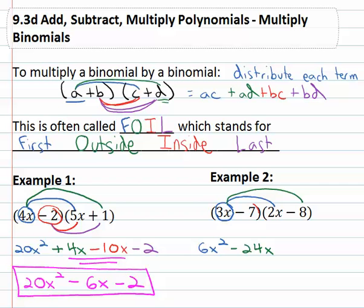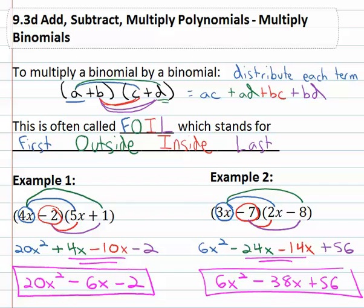Now we grab the second term, in this case it's a negative 7, and distribute it through the next polynomial. Negative 7 times 2X is negative 14X, and finally negative 7 times negative 8 is positive 56. Again we finish by looking for like terms, in the middle again we find them. Combining the negative 24X and negative 14X, we'll end up with 6X squared minus 38X plus 56 for our final solution.